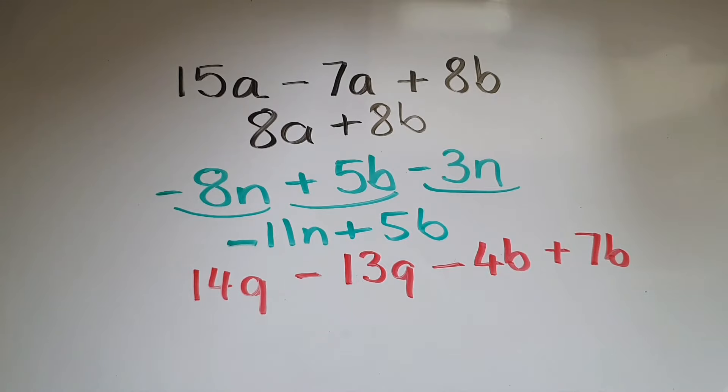14 q take away 13 q, take away four b, add seven b. So 14 q take away 13 q leaves us with one q or just q. Negative four b, add seven b. So think of negative four and you're going up seven steps. That goes up to three, so plus three b.